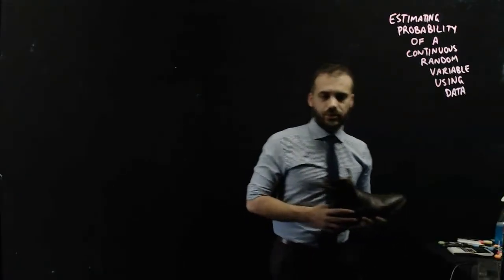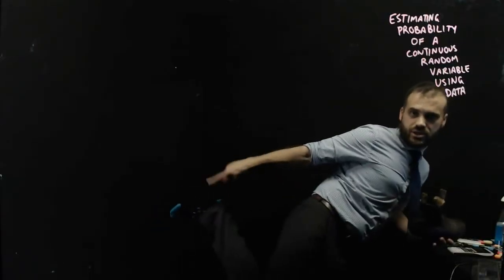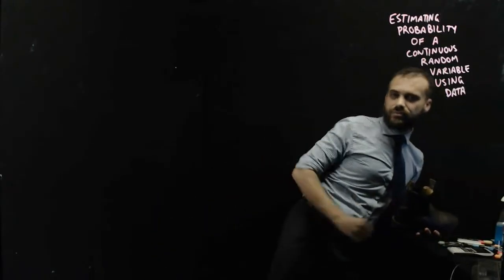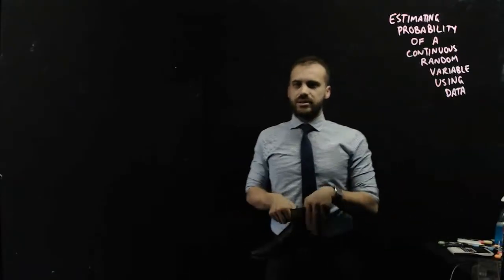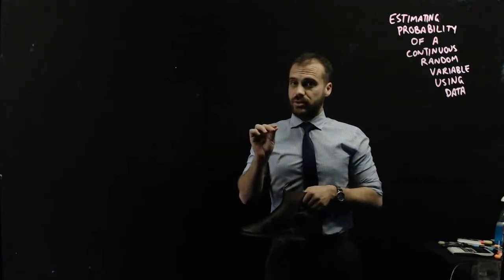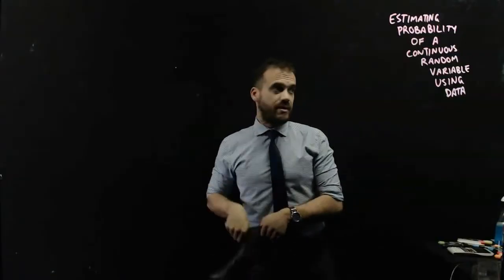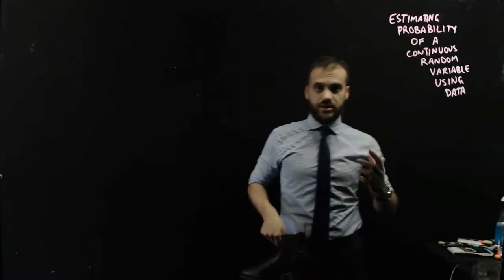What about a continuous random variable? Well, that would be my foot. Continuous random variable, the length of my foot is continuous because it can be any value within a range. It could be 23 centimeters, 23.2 centimeters, 23.25697 centimeters. That is a continuous random variable.